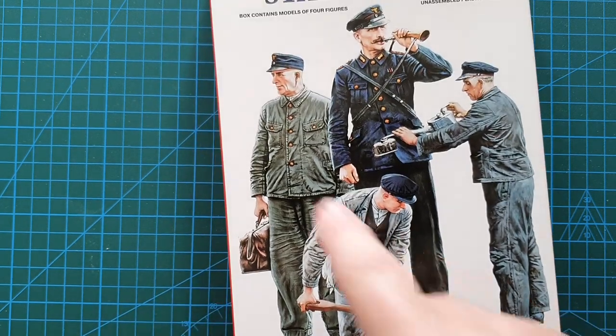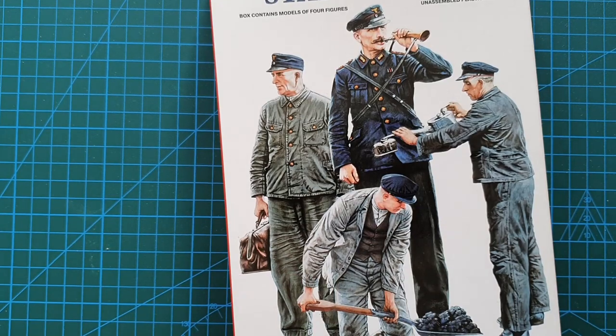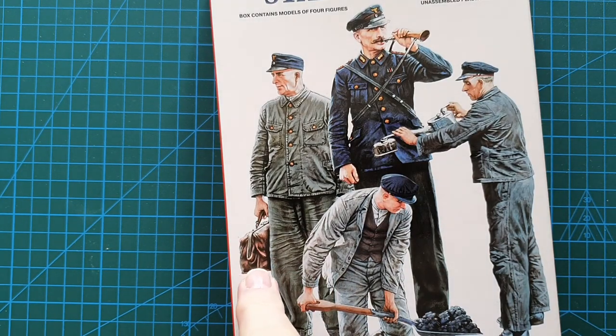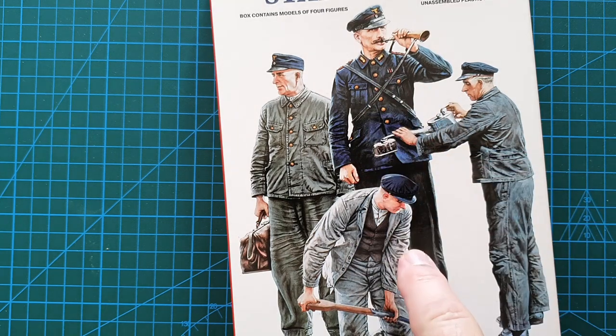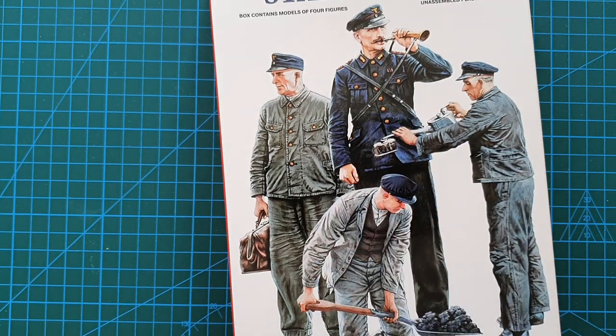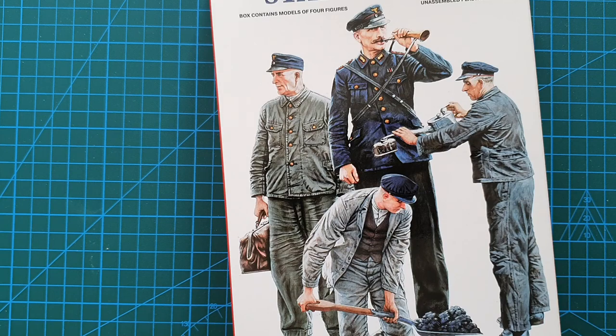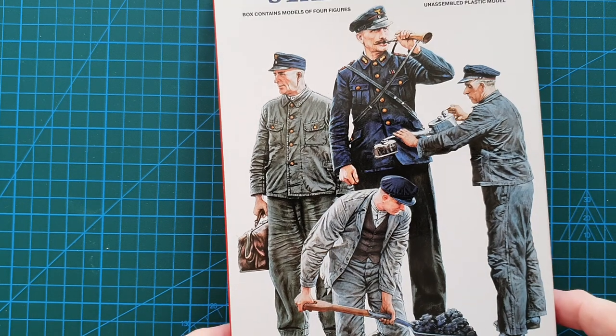This gentleman here could possibly be a driver - he does carry a satchel briefcase but he also carries a single lamp as well. This gentleman is definitely the guard, so you could use him on a station platform or on a railway carriage, that's a choice you can make.